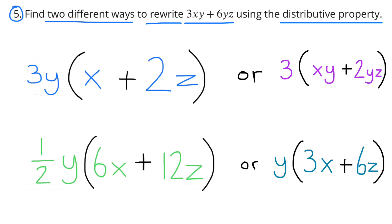Problem 5 — find two different ways to rewrite 3xy plus 6yz using the distributive property. Remember: 3xy means 3 times x times y, and 6yz means 6 times y times z. Four examples: 3y times (x plus 2z); 3 times (xy plus 2yz); one-half y times (6x plus 12z); and y times (3x plus 6z).